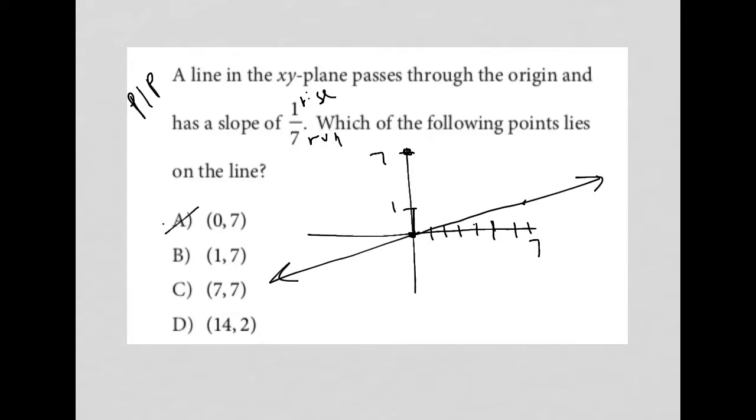1, 7, so 1 being the X, 7 again being the Y, which would take me there, so that's also not on my line.